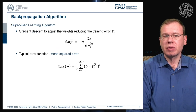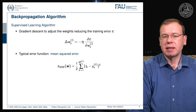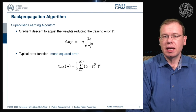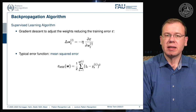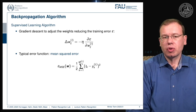To train the network, we use the backpropagation algorithm. This is a supervised learning procedure. Backpropagation is not the learning algorithm itself — it's the way of computing the gradient. We propose gradient descent, updating the weights following the gradient of the loss function epsilon, partially derived with respect to all the weights of each layer.